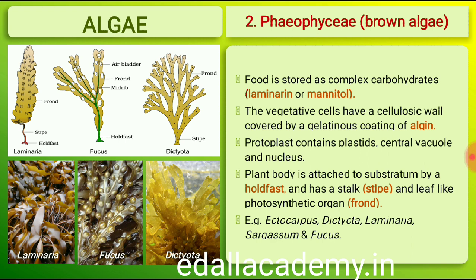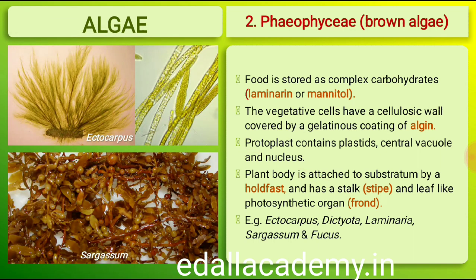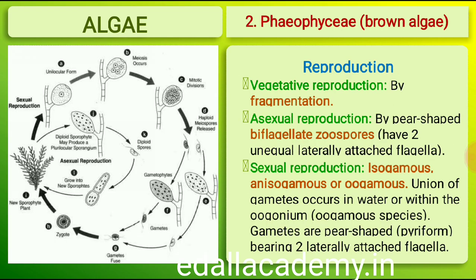Food is stored as complex carbohydrates, which may be in the form of laminarin or mannitol. The vegetative cells have a cellulosic wall usually covered on the outside by a gelatinous coating of algin. The protoplast contains, in addition to plastids, a centrally located vacuole and nucleus. The plant body is usually attached to the substratum by a holdfast, and has a stalk — the stipe — and a leaf-like photosynthetic organ, the frond. Vegetative reproduction takes place by fragmentation. Asexual reproduction is by biflagellate zoospores that are pear-shaped and have two unequal laterally attached flagella. Sexual reproduction may be isogamous, anisogamous or oogamous; union of gametes may take place in water or within the oogonium in oogamous species.